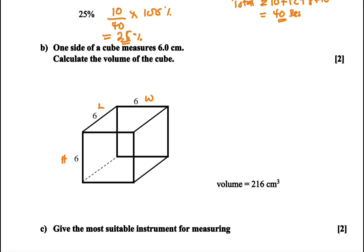And then we are asked to calculate the volume. So volume will be equal to length times width times height. So it will be equal to 6 by 6 by 6. And then that would give us 216. So it would be 216 cubic centimeters. Is that okay? That was our answer.